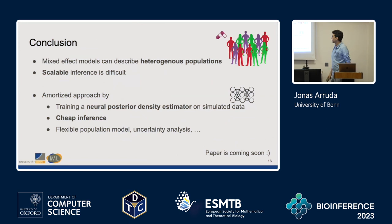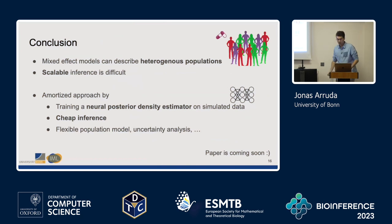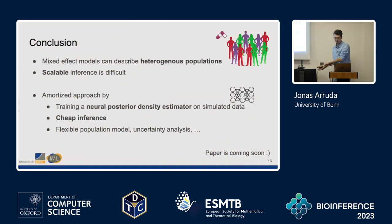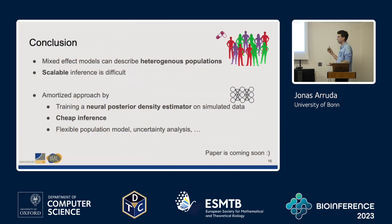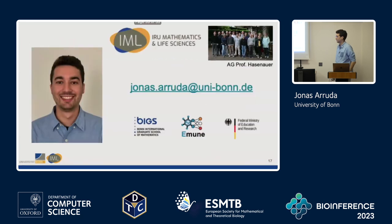In conclusion, mixed effect models are there to describe heterogeneous populations, but the problem is scalability. What I showed today is an amortized approach where we train a neural posterior density estimator on simulated data, allowing cheap inference. The real benefit is a flexible population model, easy uncertainty analysis, and computing profile likelihoods is really easy and nice. The paper is coming out soon.